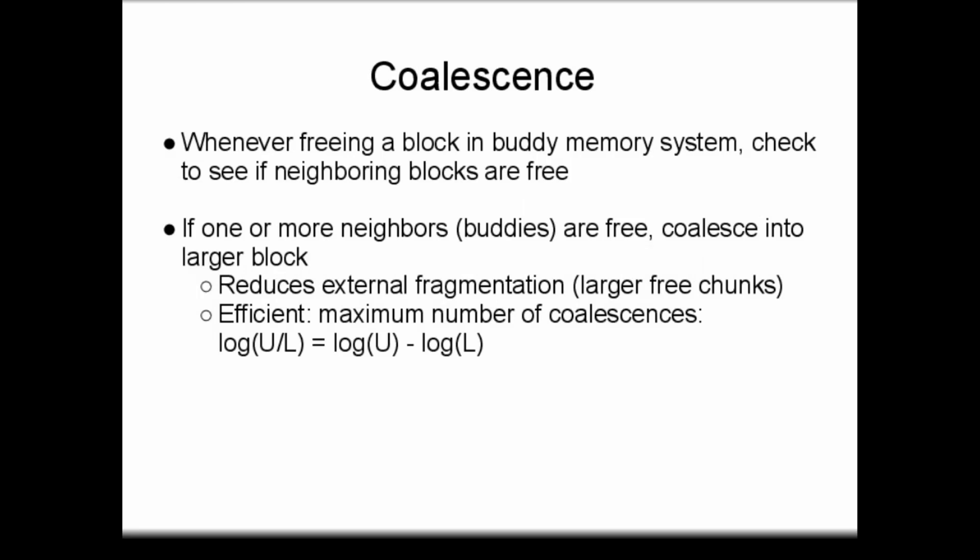In addition to the block size limits, the buddy system also uses a technique called coalescence. Whenever a process frees a block, the kernel checks to see if either neighboring block is free also. If one or more neighbors, or buddy blocks, are free, the block is coalesced into a larger block, reducing external fragmentation. The coalescence algorithm is efficient, since the maximum number of coalescence operations that must be performed is equal to the base-2 logarithm of U divided by L. By properties of logarithms, this value is equivalent to the base-2 log of U minus the base-2 log of L.